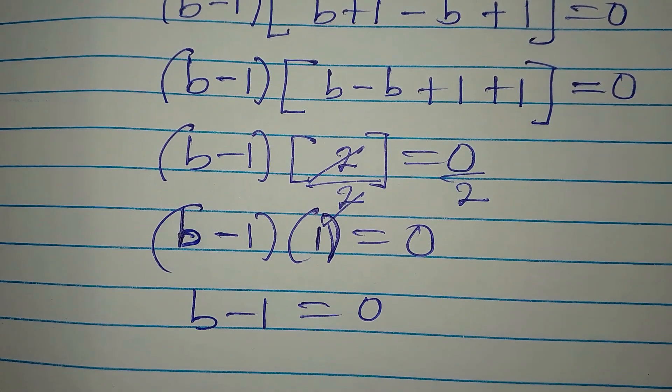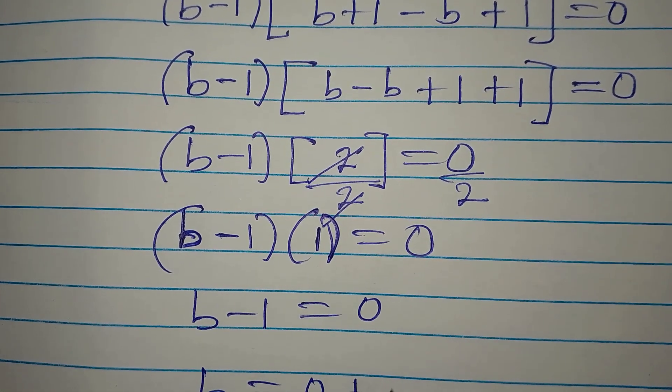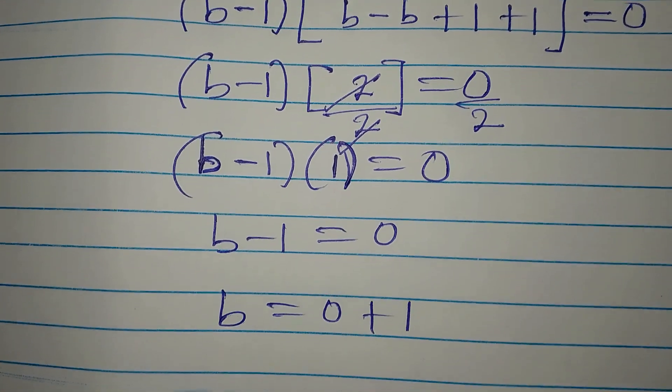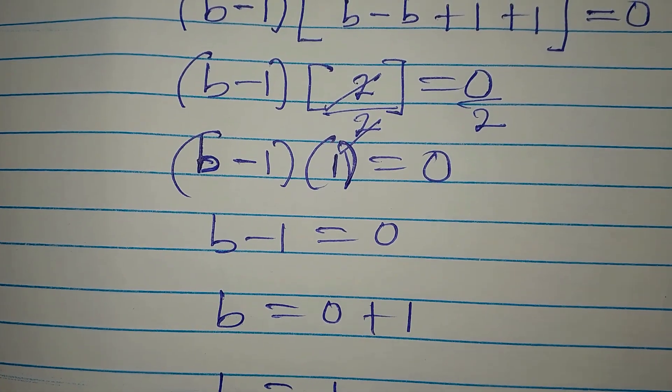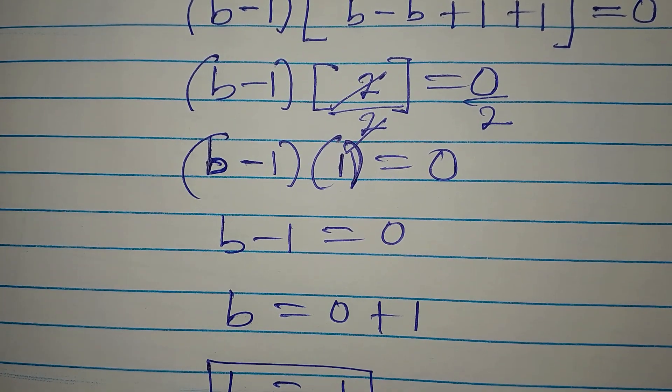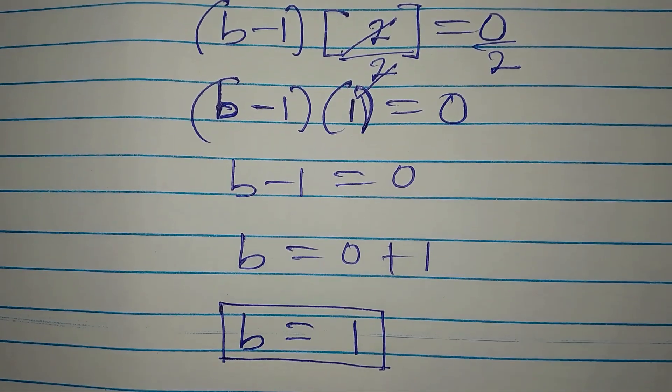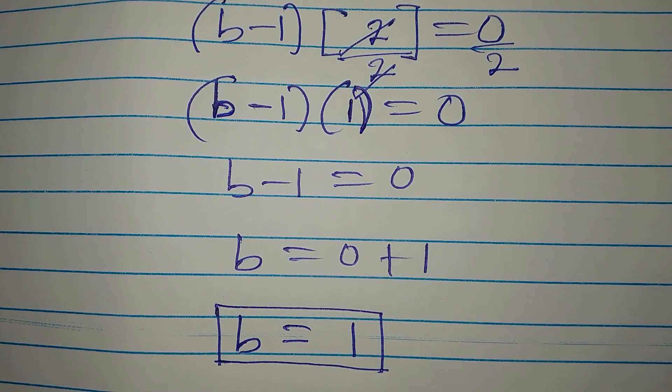And our duty now is to take this to the other side, which is b equals 0 plus 1. b is now alone. And our b is equal to 1. So this is the value of b. But like we always do, we verify. Let's put it back into the equation and see what we are going to have.